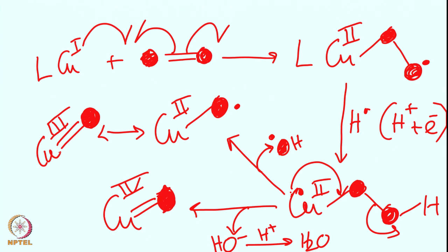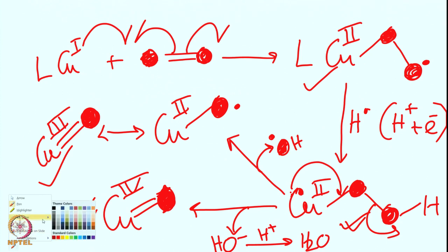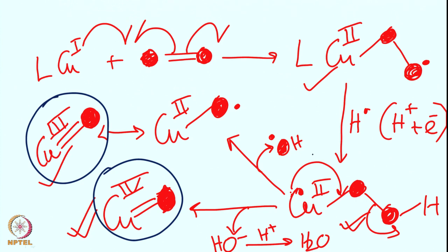These high-valent cupric oxyl species are quite phenomenal, and people believe that this is exactly what is happening in PHM and DBM. This debate still remains — which is the active species: the superoxo, the hydroperoxo, or the cupric oxyl — and in the absence of suitable experimental studies we can keep all these possible intermediates responsible for the chemistry on the table.